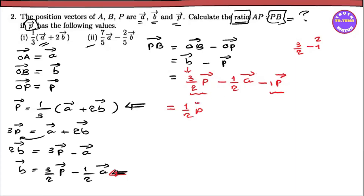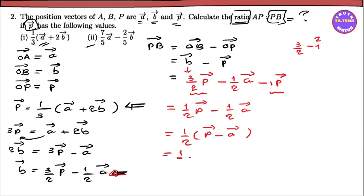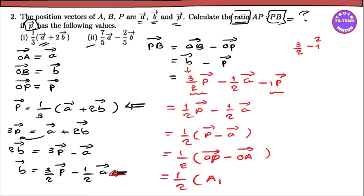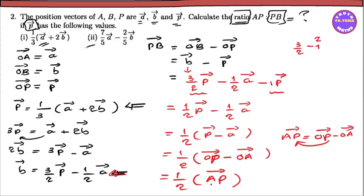1/2 B vector negative 1/2 A vector. So we have 1/2 A vector and B vector negative A vector. B vector position OP vector minus OA vector is a position vector. AB vector is OB minus OA, so this is AB vector.